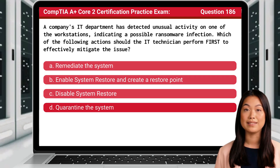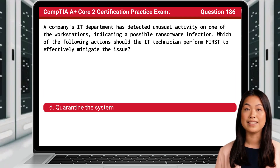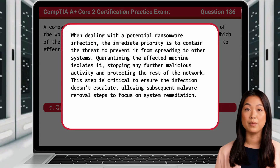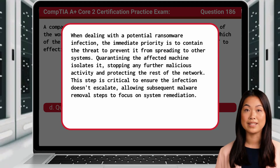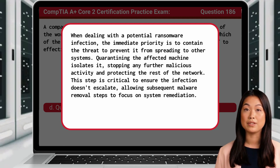The answer is D: Quarantine the system. When dealing with a potential ransomware infection, the immediate priority is to contain the threat to prevent it from spreading to other systems. Quarantining the affected machine isolates it, stopping any further malicious activity and protecting the rest of the network. This step is critical to ensure the infection doesn't escalate, allowing subsequent malware removal steps to focus on system remediation.